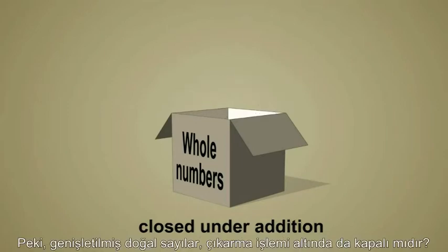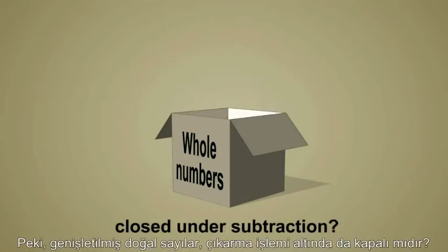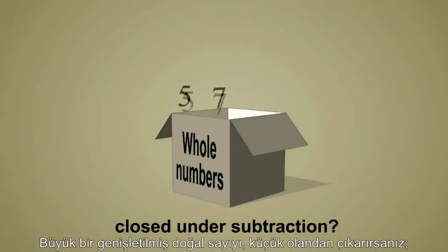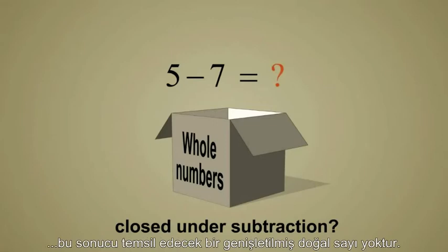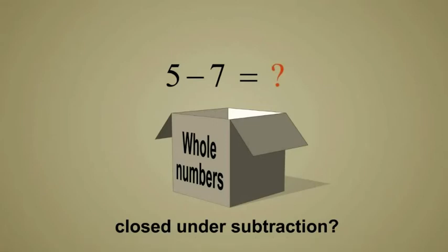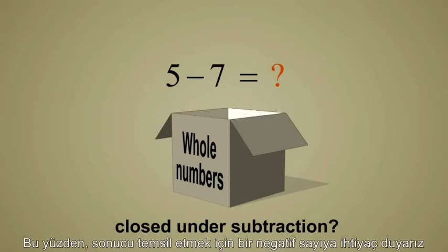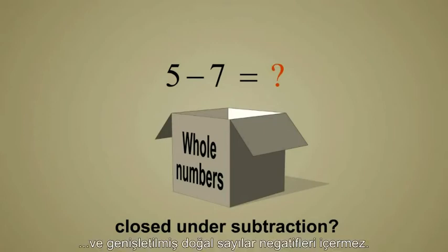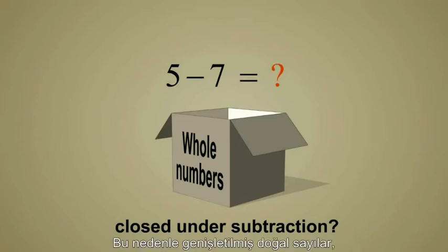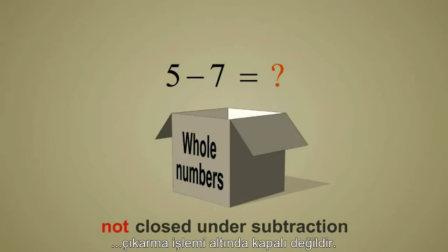But are the whole numbers closed under subtraction? If you subtract a larger whole number from a smaller whole number, there is no whole number which can represent the result. This is because we would need a negative number to represent the result, and whole numbers do not include negative numbers. Therefore, the whole numbers are not closed under subtraction.